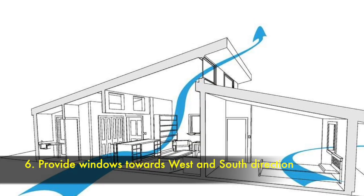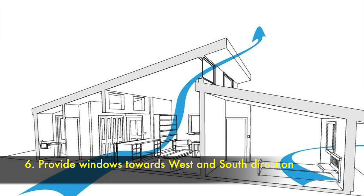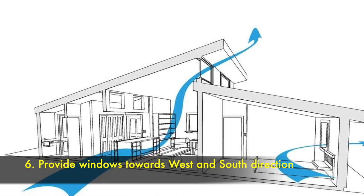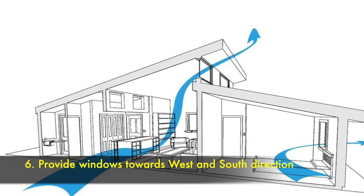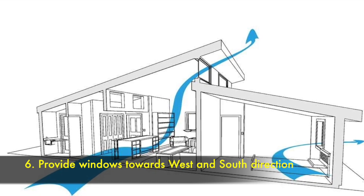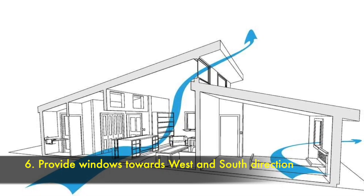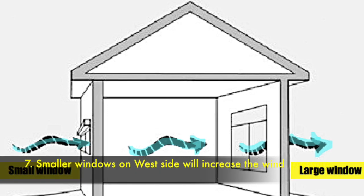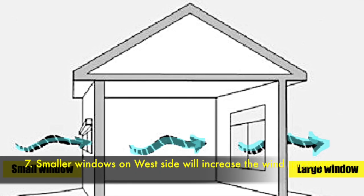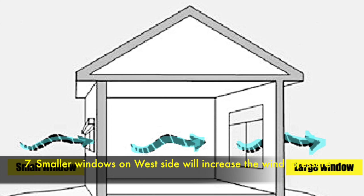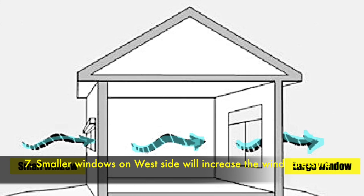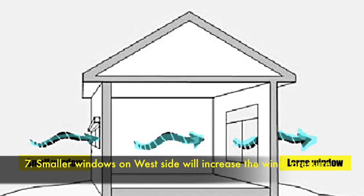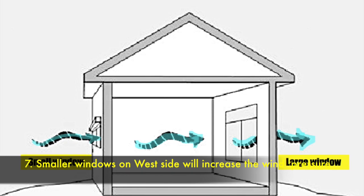The sixth one is provide windows towards west and south direction, because wind direction in Bangalore is from southwest. The seventh one is provide smaller size openings in the west direction to avoid direct solar radiation and to increase the wind pressure inside the building, as the wind direction in Bangalore is from southwest.